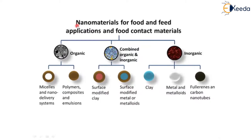Nanomaterials are not limited to a single area. For food and feed applications they act as input contact materials — both organic and inorganic. If you take the inorganic category, there are miscellaneous nanomaterials and nano delivery systems. In polymers, composites, and emulsions these nanomaterials are useful. Combined organic and inorganic includes surface modified clay and surface modified metals or metalloids.